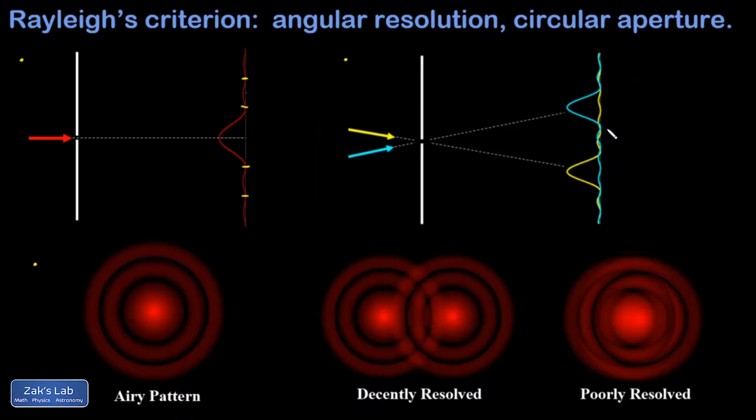I can see that some of that diffraction pattern is overlapping between the two images. At some point, two stars could be close enough where it becomes impossible to tell you're looking at two stars because their diffraction patterns are just too overlapped.